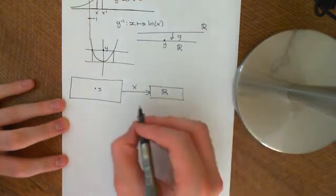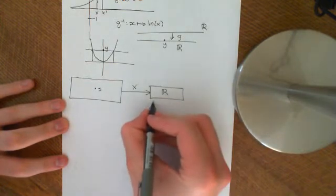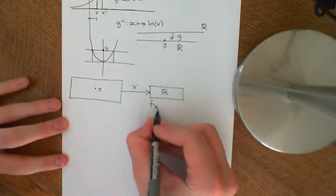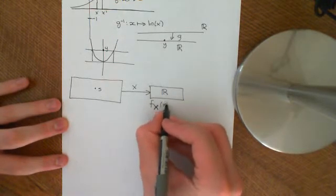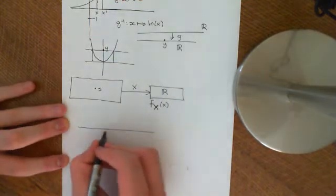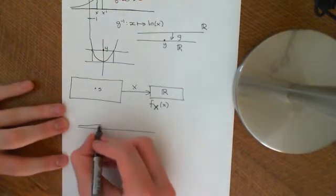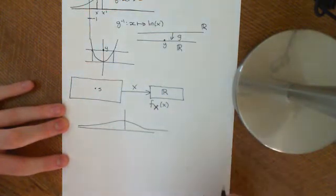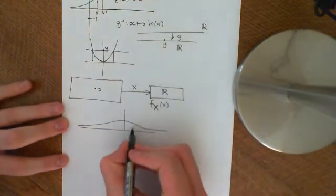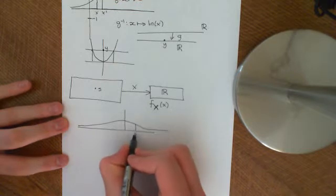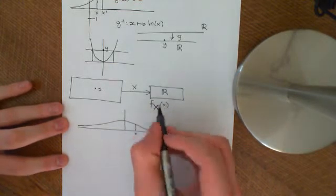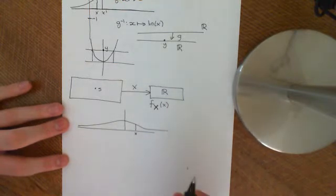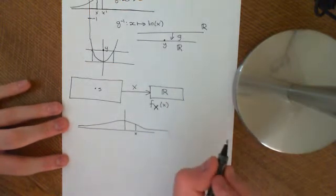Because it's a continuous random variable, instead of a probability mass function we have a probability density function — the PDF of random variable big X as a function of little x. This is some function that looks maybe vaguely normal. What it does is ascribe to every single point little x a real number, which doesn't necessarily need to be between 0 and 1, but it does need to be non-negative.